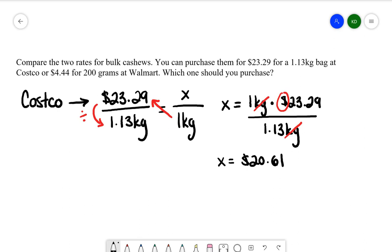Let's do the same thing at Walmart. I'm going to be paying $4.44 for 200 grams. Here's where we need to think about what do we know? I know that one kilogram is equal to 1,000 grams.